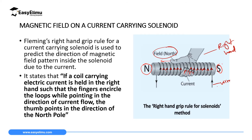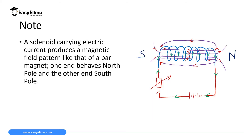It is very important to note that a current-carrying solenoid produces a magnetic field like that of a bar magnet, where one end behaves like a north pole and supplies the magnetic field lines, and the other end behaves like a south pole and acts as the sink for the magnetic field.